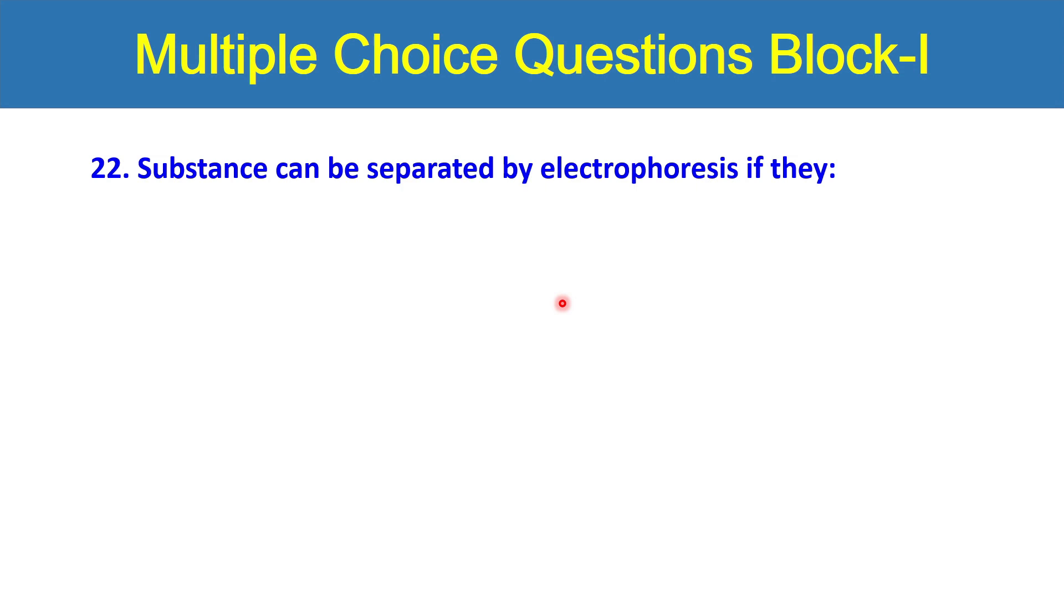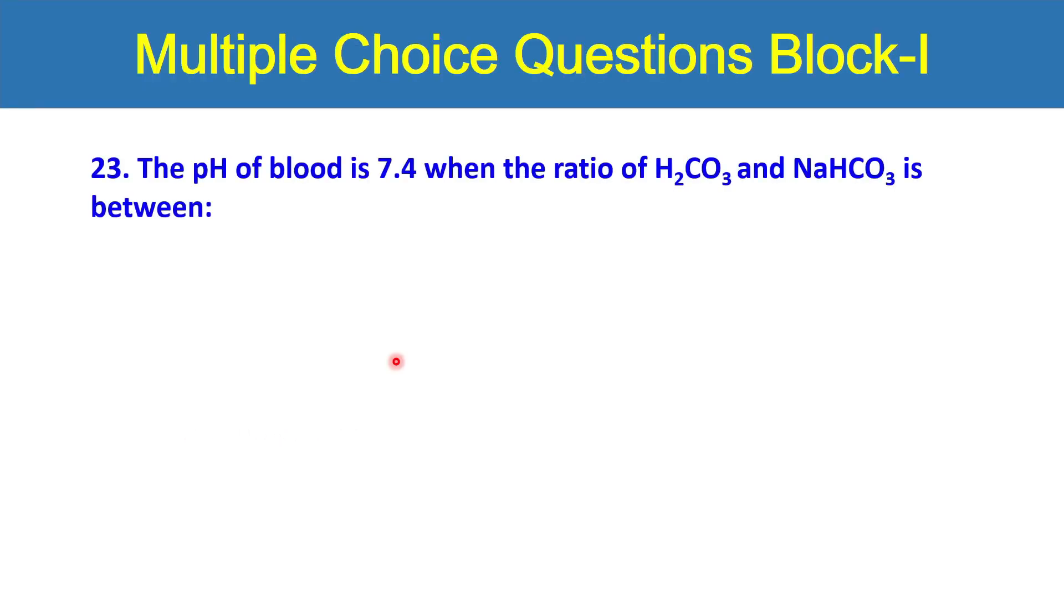Question number 22: substances can be separated by electrophoresis if they are soluble in water, insoluble in water, higher in molecular weight, or do you think that electrically charged compounds or molecules can be separated through electrophoresis? The last option is have low molecular weight. Question number 23: the pH of blood is 7.4 when the ratio of bicarbonate and sodium bicarbonate is between 1 to 10, 1 to 20, 1 to 25, 1 to 30, or 1 to 40? Ratio between H2CO3 and NaHCO3 or bicarbonate.